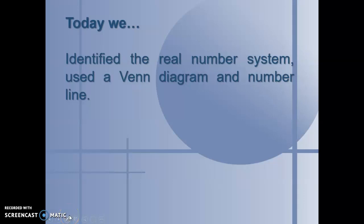Today we identified the real number system using a Venn diagram and a number line. We know that numbers are part of sets, they are elements of sets, and they are often part of more than one set, as they belong to different subsets within the real number system. If you have any questions, please be sure to ask me in class the next time you see me.